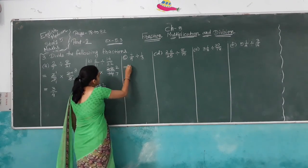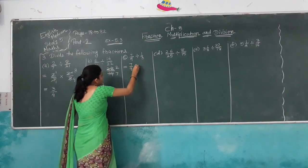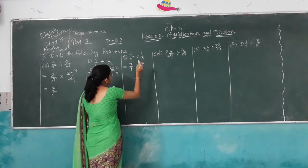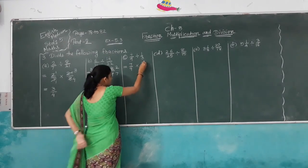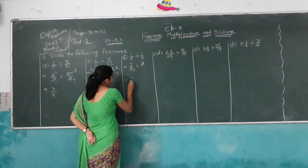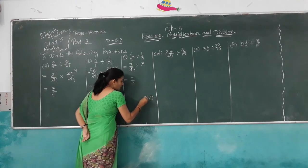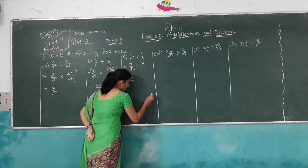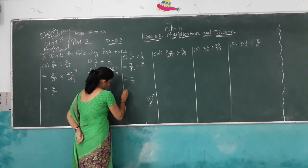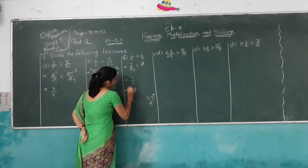Next: 7/9 divided by 1/3. The reciprocal of 1/3 is 3. So 7/9 multiplied by 3: 3 goes into 9 giving 3 in denominator and 1 numerator contribution. We get 7/3, which is improper. Converting: 3 goes into 7 twice with remainder 1, so the answer is 2 and 1/3.